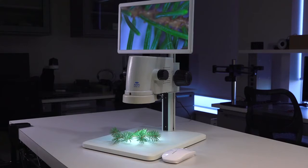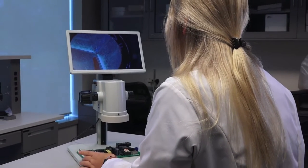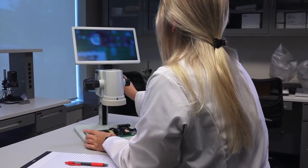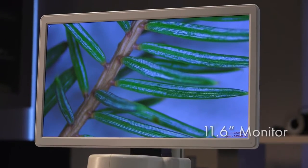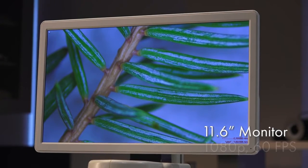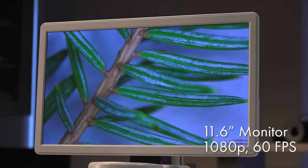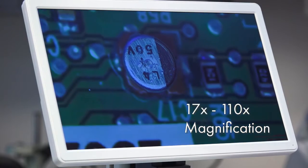AVEN's MICROVIEW Digital Microscope is an all-in-one inspection system. With its compact design and built-in HD monitor, the MICROVIEW is an ideal microscope for ergonomic inspection. The built-in 11.6-inch HD monitor displays real-time crystal-clear 1080p images at 60 frames per second with a magnification range of 17x to 110x.